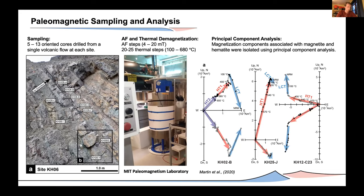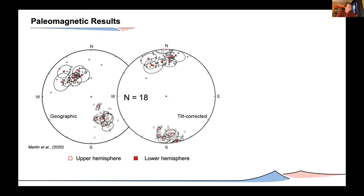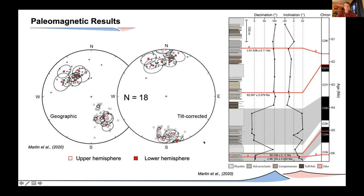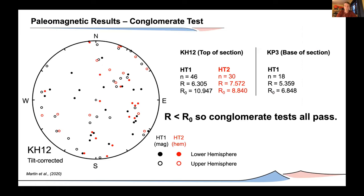Our results define two antipodal populations — shown here in geographic and tilt-corrected coordinates. We have 18 site mean orientations, and these antipodal populations when plotted against stratigraphy resolve all but one of the expected magnetochrons for the age range of our study. The presence of these expected magnetic reversals is a strong indication that the magnetization of our samples is not a post-depositional overprint, because such an overprint would be expected to completely obliterate the reversal record.